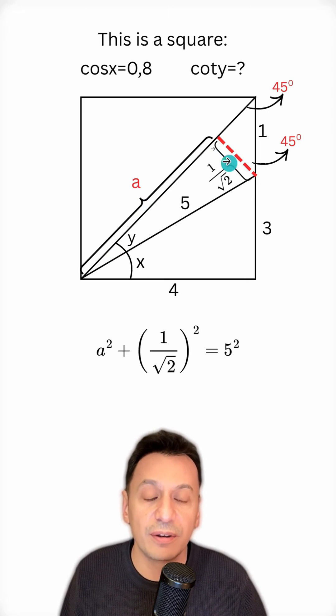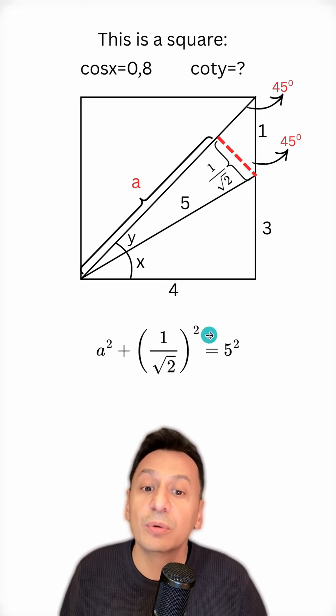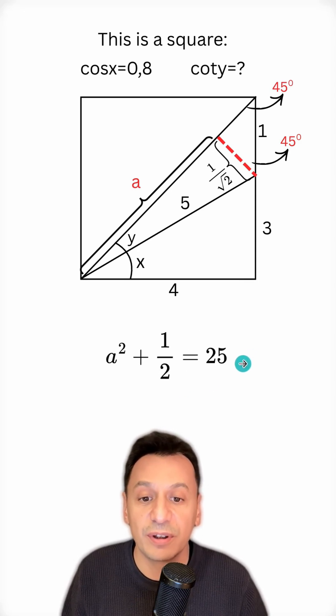The square of a plus the square of 1 over root 2 should be equal to the square of 5. The square of 1 over root 2 will be 1 half, and the square of 5 is 25.